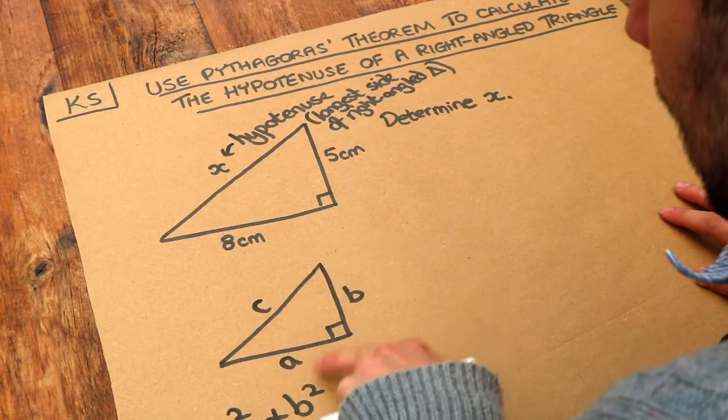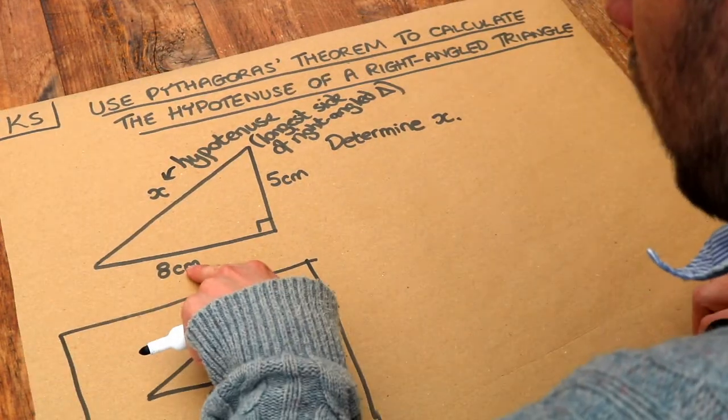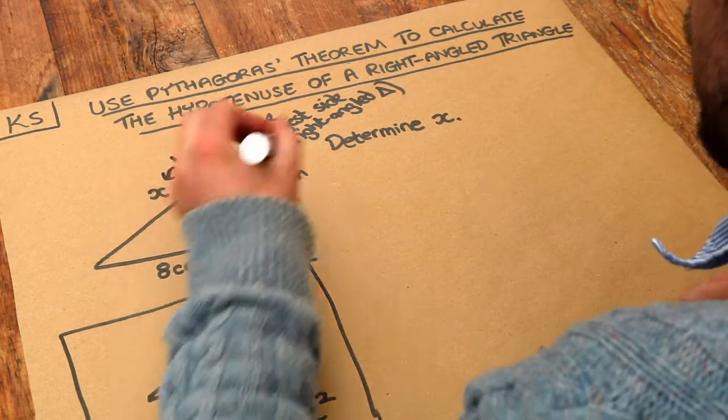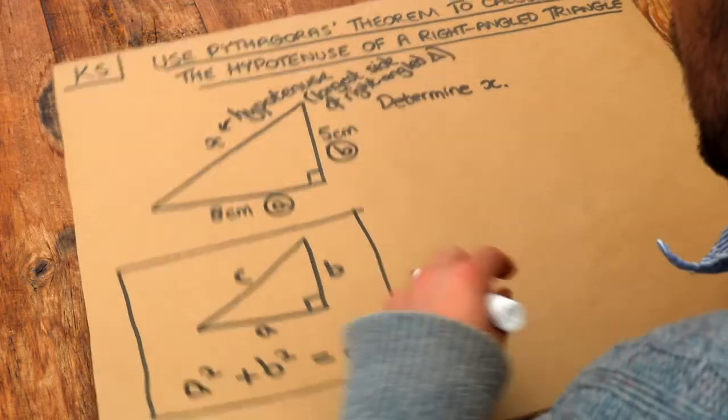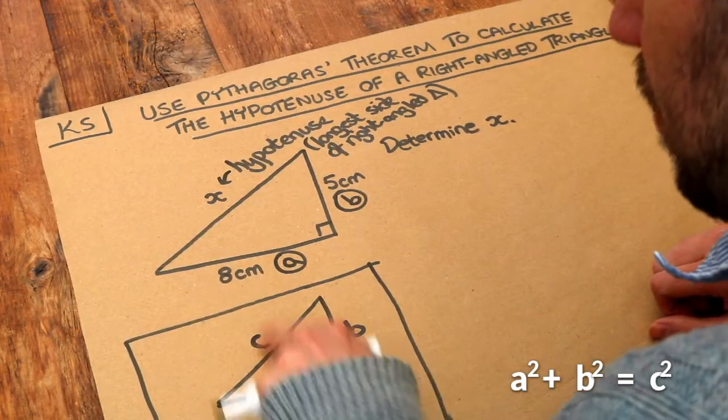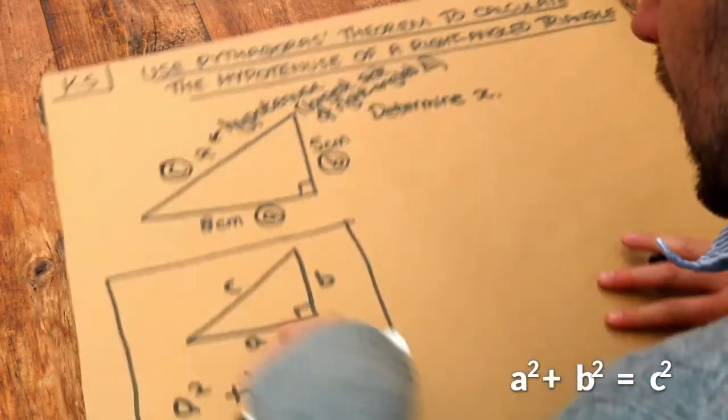So we just need to substitute these sides into this particular formula here. So we can make one the shorter sides A and the other shorter side B. It doesn't matter which way round they go because the way you add them doesn't matter. And then the longest side has to be the C. And let's just substitute A, B, and C into this formula.